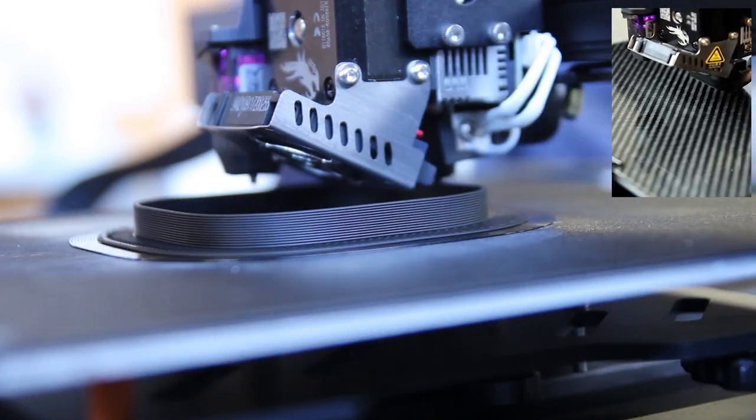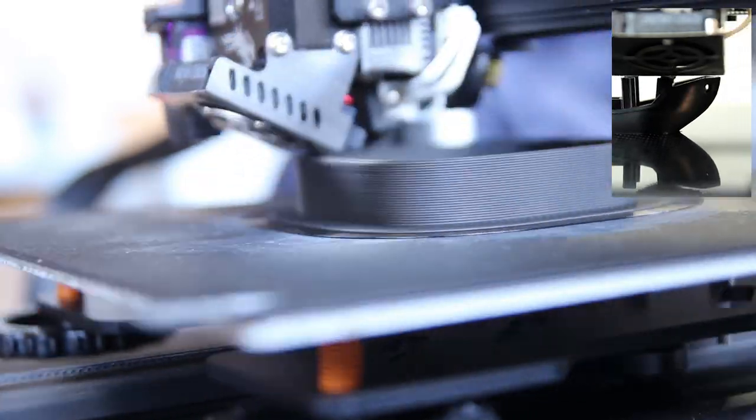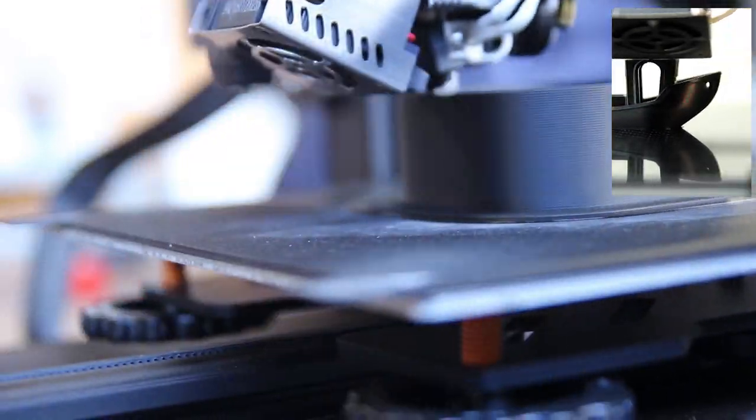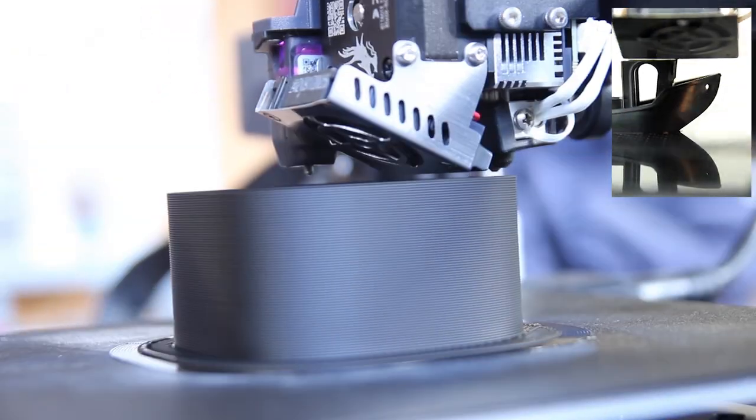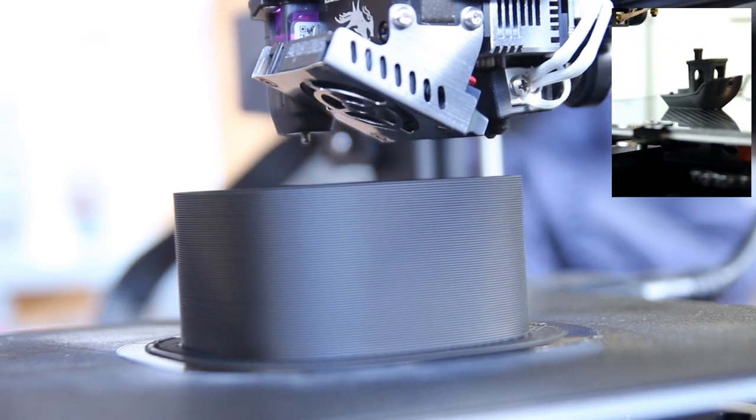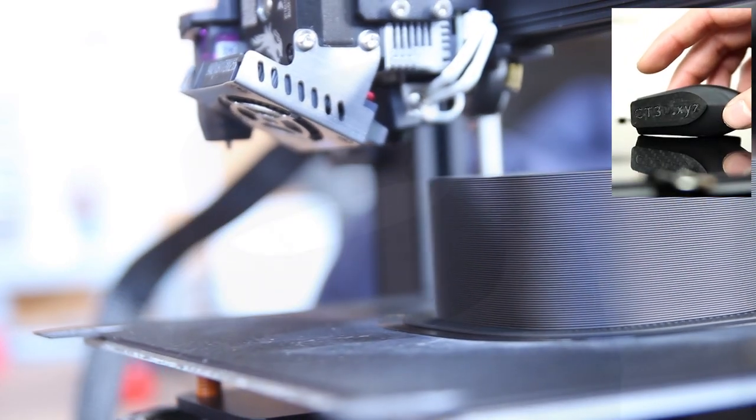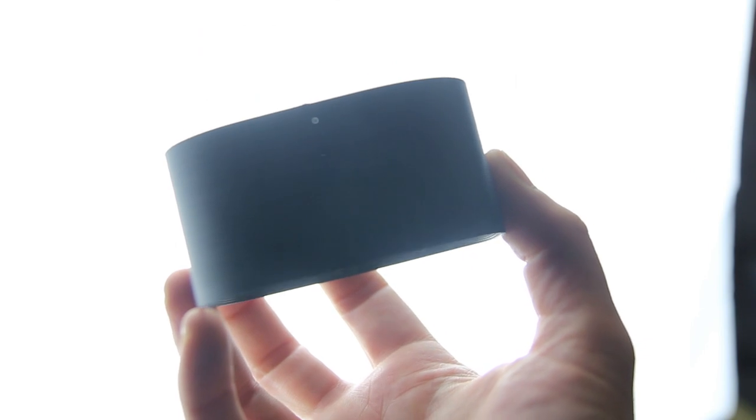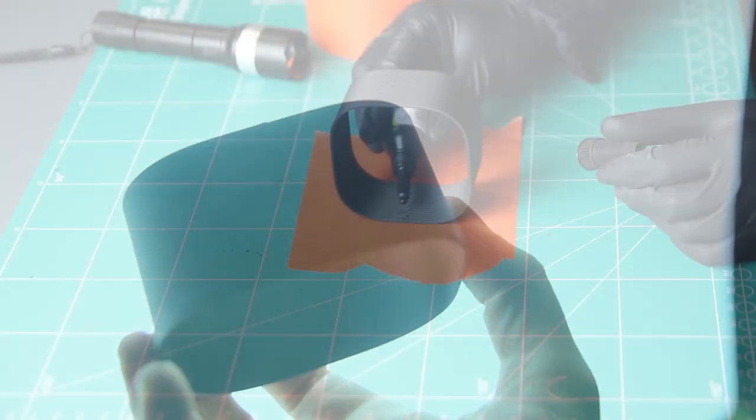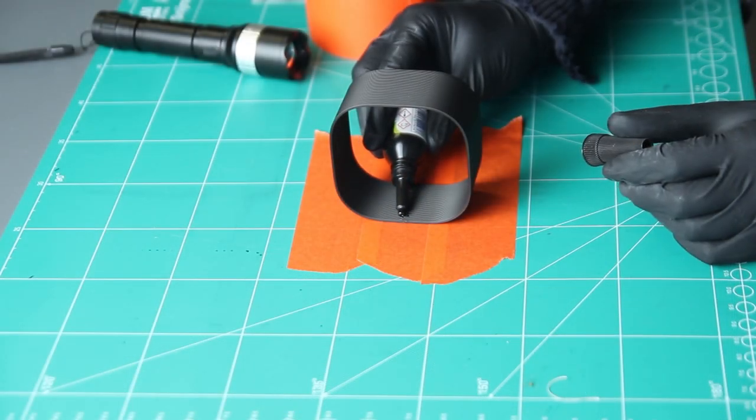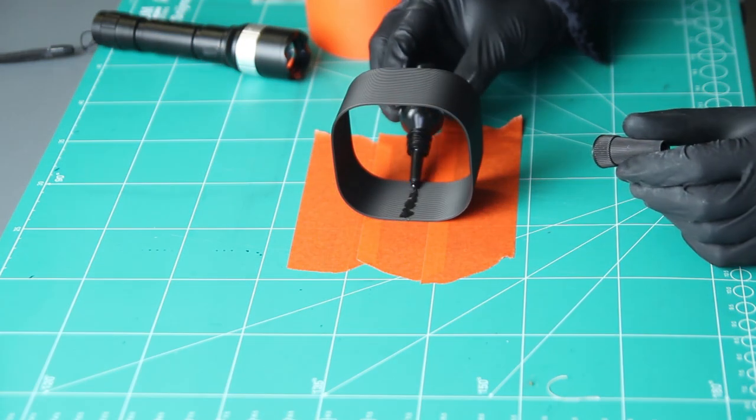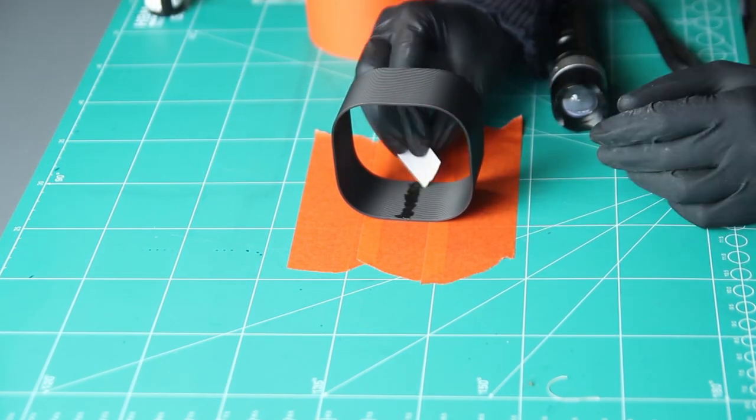To print the other parts, the mold box, I've used my second Ender 3 S1 with a 0.8 nozzle printing at 0.6 layer height in PLA. That way I was able to create a mold box in a fast way.